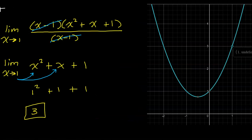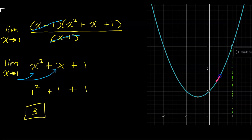Let's take a quick look at the graph. This turns out to be a parabola with a hole at x equals 1. As x values approach 1 from the left and right, it's okay that the function is undefined there. What we want to know is what y value is being approached. We can see that we are approaching a y value of 3, which is exactly what we found analytically.